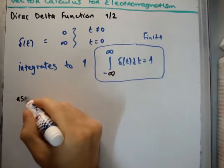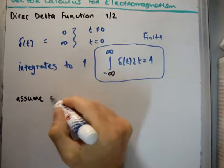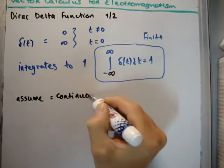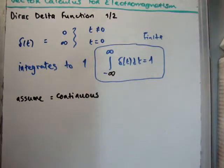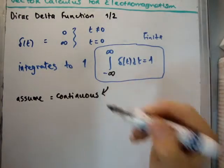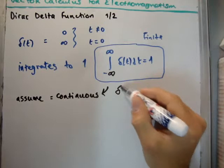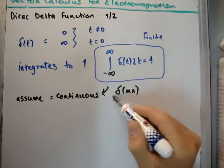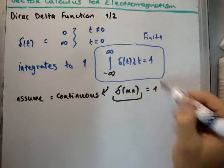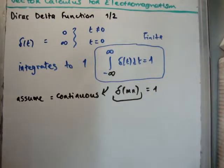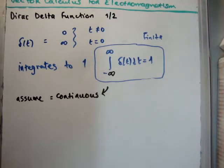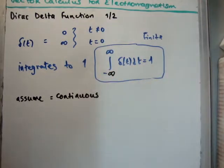What we do next is we make another assumption: we assume it is continuous. You may have seen the Kronecker delta function, written as delta mn. The Kronecker delta function can be thought of as the discrete version of the delta function, or you can consider the Dirac delta function as the continuous version of the Kronecker delta. Just think: the Kronecker delta is for discrete variables, and the Dirac delta function is for continuous variables.